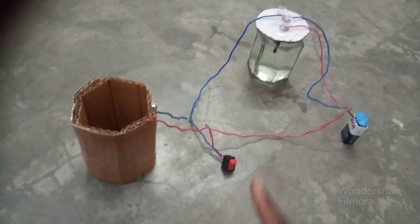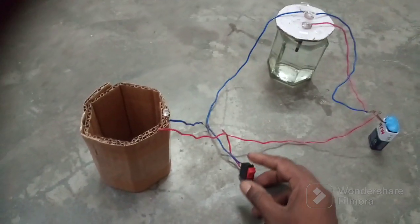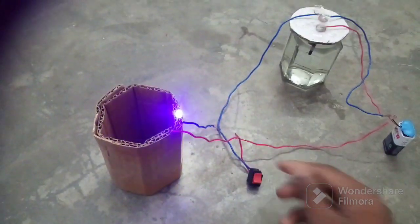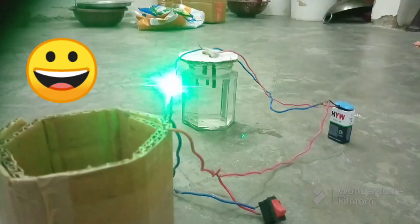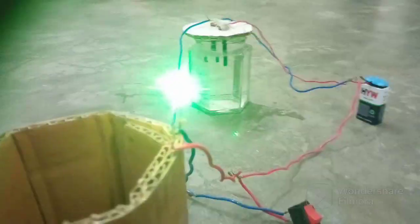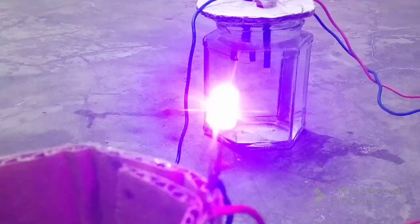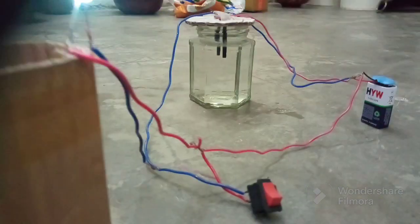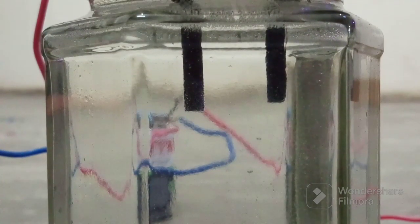Now it's time to check if it is working or not. Let's get started. When we turn on the switch, we can see the bulb glows, which means this activity is working properly.